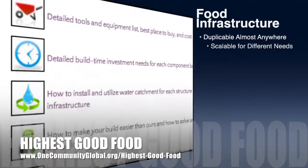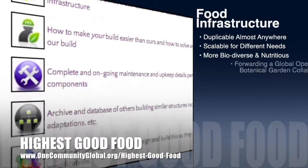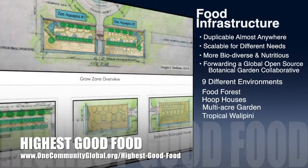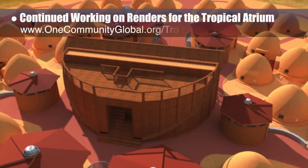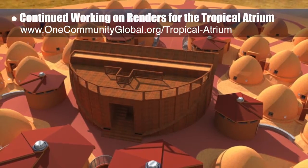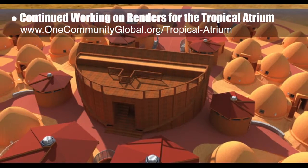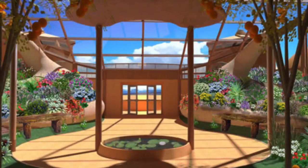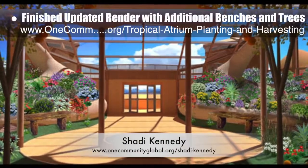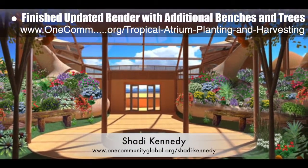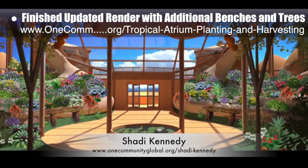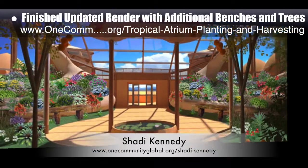One Community's approach to highest good food is duplicable almost anywhere, scalable for different needs, more biodiverse and nutritious, part of a global open source botanical garden collaborative, and includes nine different free shared growing environments. This week the core team continued working on renders for the tropical atrium at the center of the earth bag village pod one. We made adjustments on textures for roads and completed work on shadows. Shoddy Kennedy finished a render by adding benches and plant details, showing the tropical atrium flourishing with fruit trees, flowers, and other plants.